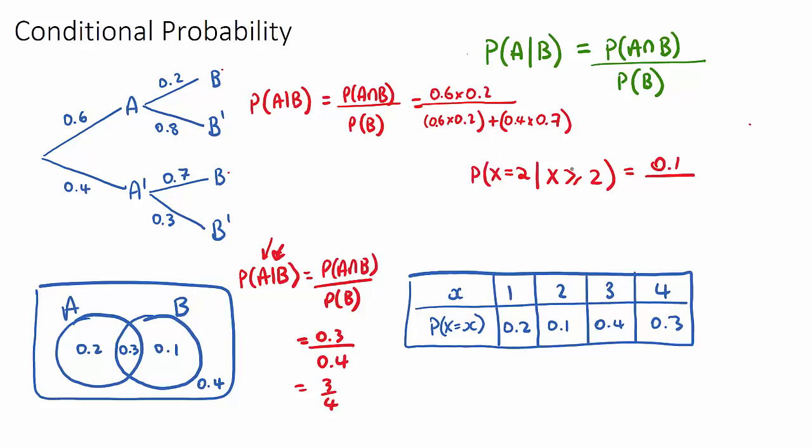And the denominator will be the probability that our random variable is greater than or equal to 2, which is this plus this plus this. So we get our 0.1 divided by, and we'll have 0.8. And you can just do this on your calculator to get your decimal answer.